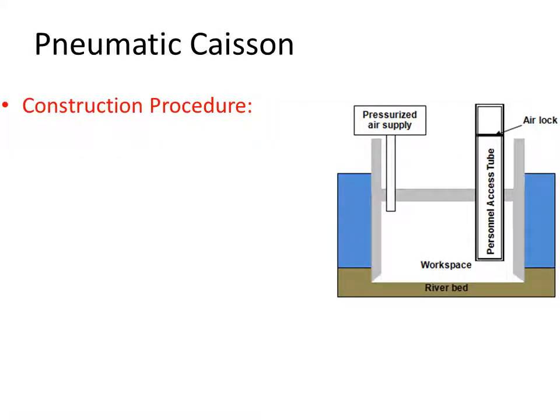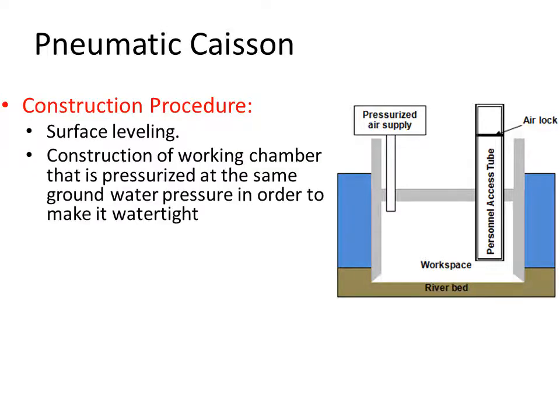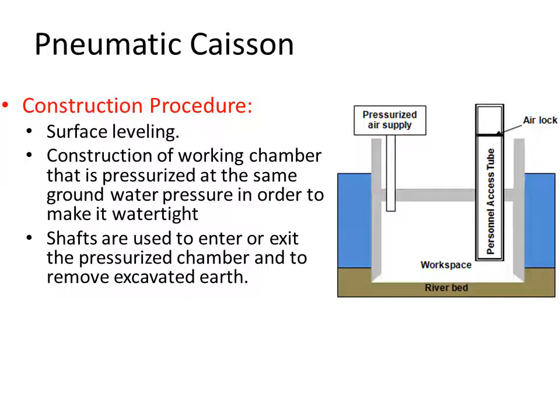The pneumatic caisson is the most advanced type. The basic idea is that there is a pressurized workspace with air pumped into it, and a tube that personnel can use to access the workspace, allowing excavation in dry conditions. Construction begins with surface leveling, then the working chamber is constructed and pressurized at the same pressure as the groundwater to make it watertight. Shafts are used to enter or exit the pressurized chamber and to remove excavated soil. Excavation is done in three to four meter intervals, with the cutting shoe used to penetrate into the soil while sections are added from above.